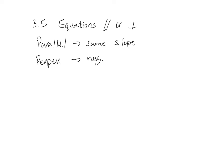Section 3.5 is equations of parallel or perpendicular lines. For parallel lines, same slope. Perpendicular lines, negative reciprocal slope.